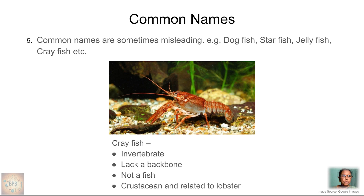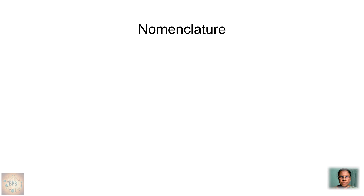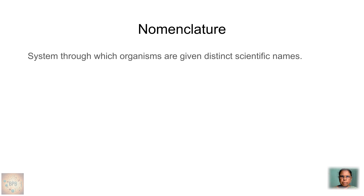These are the five drawbacks of using common names. To overcome these drawbacks, there is a need to standardize the names of all living organisms. Based on this, a universally accepted, unique scientific name has been provided to every single organism — every organism is known by the same name all over the world, and this process is called nomenclature. A system through which organisms including plants, animals, and microorganisms are given distinct scientific names is called nomenclature.